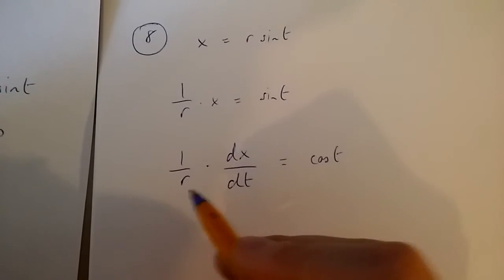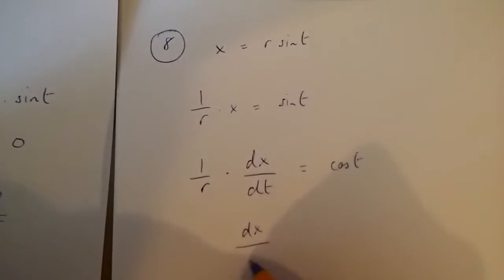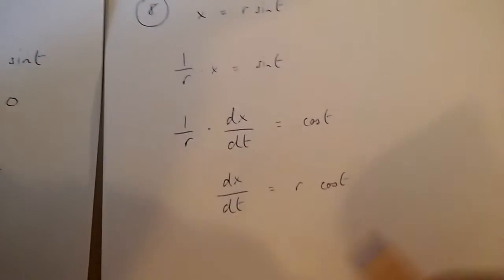Now, I'm going to multiply both sides of this equation by r. So, I get dx over dt is equal to r times cos t.